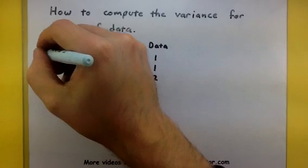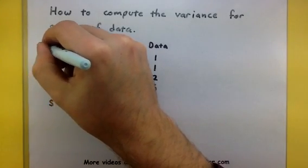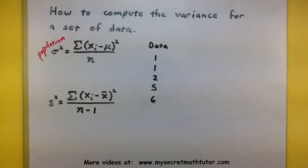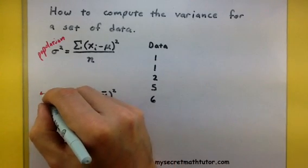The first one is for if you have a population. So are you talking about all the numbers, the whole thing? Or are you talking about just a sample?